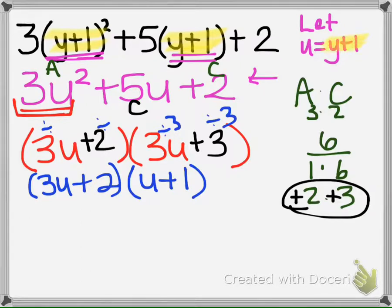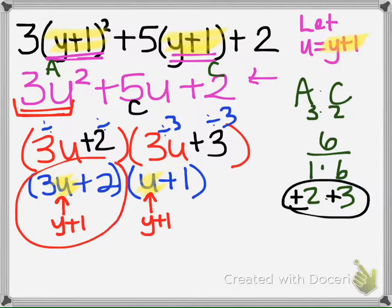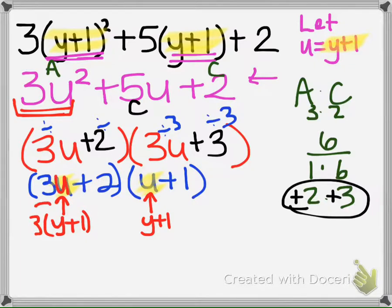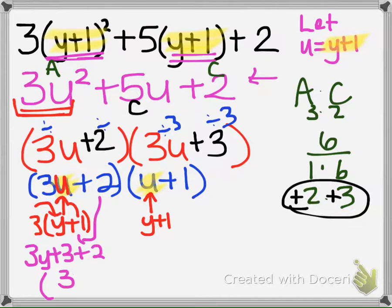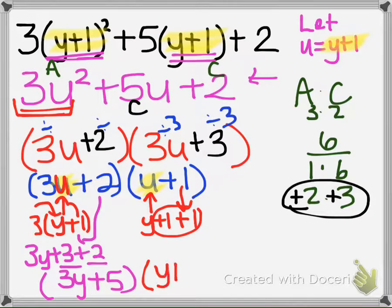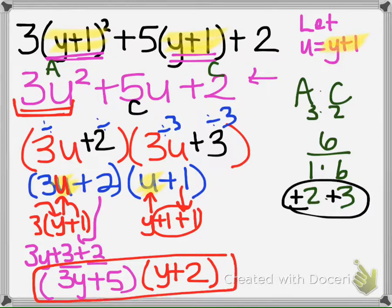We let u represent the y plus 1, so we go back and plug in y plus 1. Then we simplify: there's a 3 in front of the u that we need to distribute, so we get 3y plus 3, and then we also have this plus 2, so that becomes 3y plus 5 when we combine like terms. Over here we have y plus 1 plus 1, and we can combine these to make y plus 2. And we have our factored form.